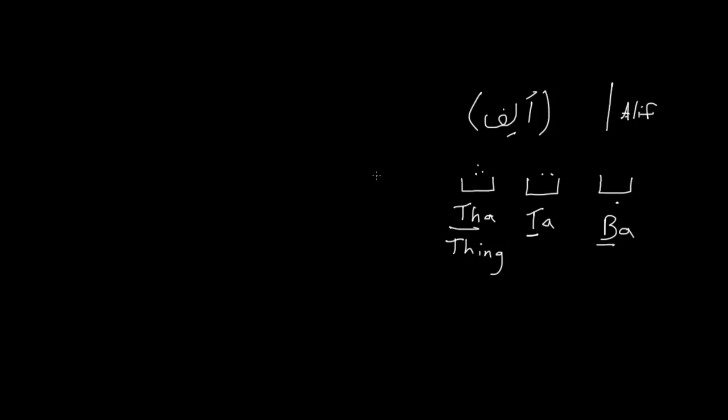And the next three, this is a family of letters because they all look the same. The next three also form a similar family. The first one is J. And this makes a J sound. Just like in English, like the word George or Judge is this letter in Arabic, J.